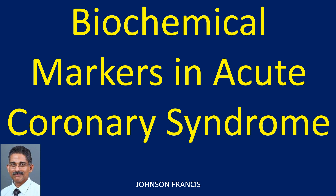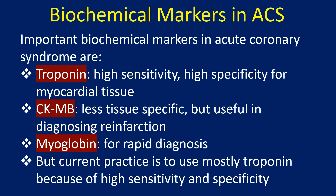Biochemical markers in acute coronary syndrome. Important biochemical markers in acute coronary syndrome are: Troponin – high sensitivity, high specificity for myocardial tissue; CKMB – less tissue specific but useful in diagnosing reinfarction; and Myoglobin – for rapid diagnosis.